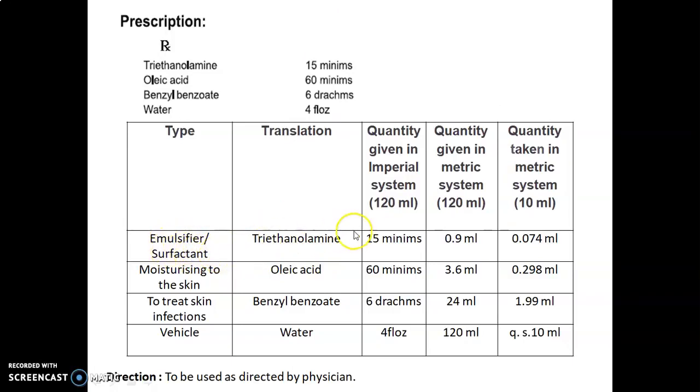The quantity given in imperial system is 15 minims. As we know, one minim equals 0.06, so 15 times 0.06 equals 0.9 ml. Quantity taken in metric system to prepare up to 10 ml is 0.074 ml using the factor. Oleic acid is used as a moisturizing agent to the skin to maintain moisture balance. Quantity given in imperial system is 60 minims, so 60 times 0.06 equals 3.6 ml, and quantity taken is 0.298 ml.